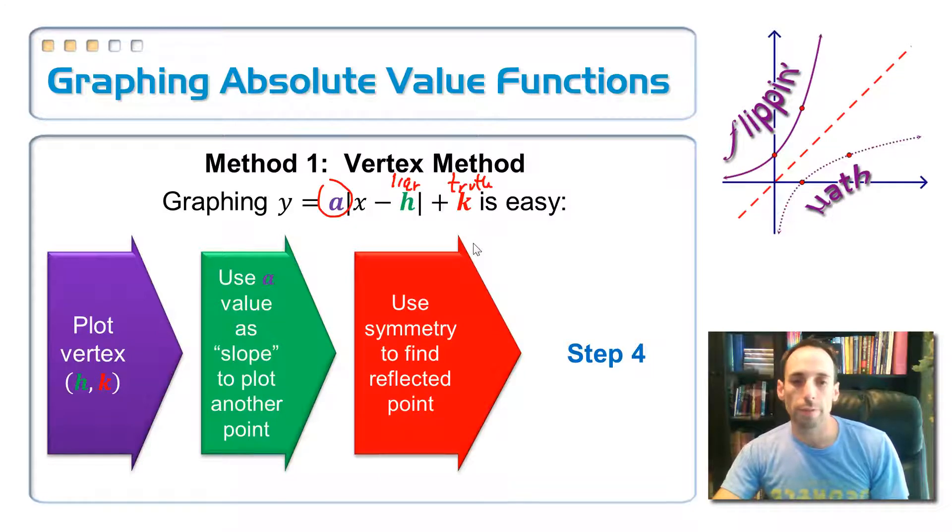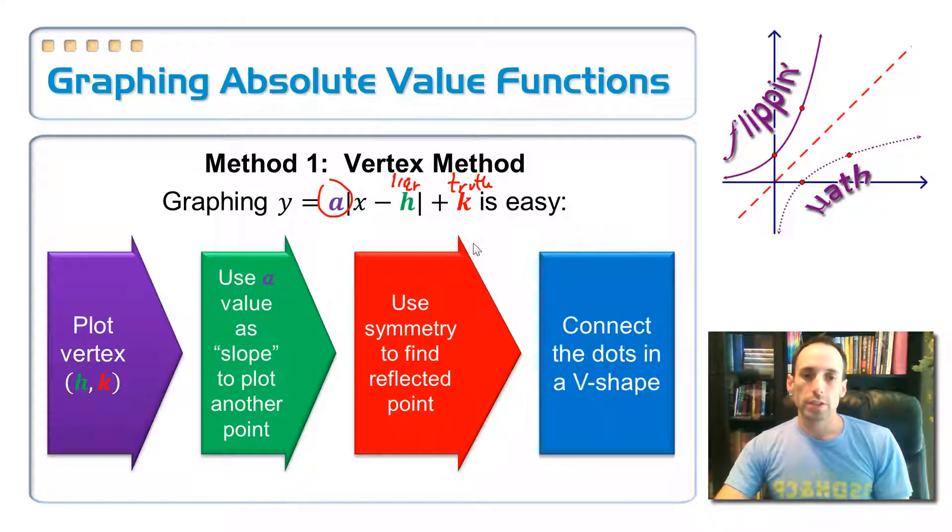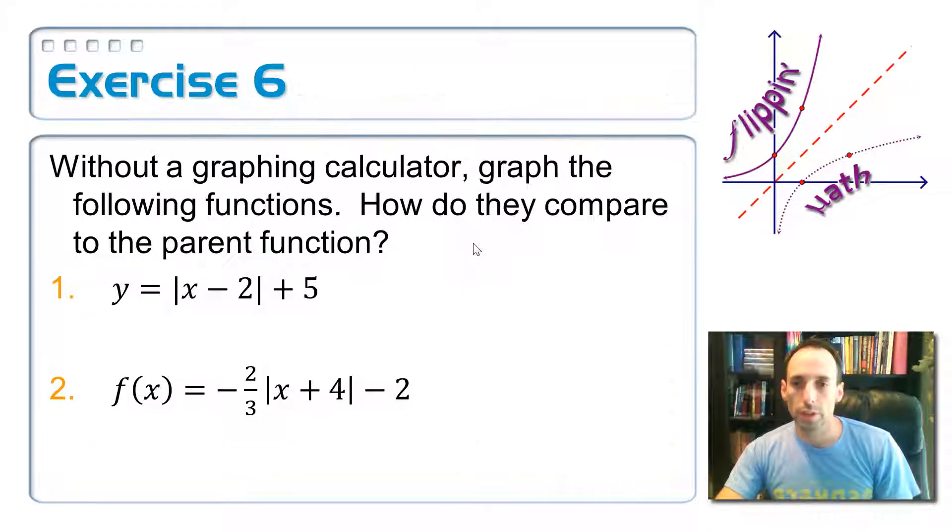And then finally, step four, you're going to put it all together to connect the dots in that V shape. You only really need three points here. You might get a couple more just so you can get a nice line on each side. So let's put these things together. Let's graph a couple of these.